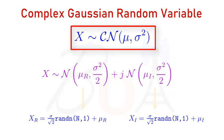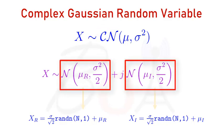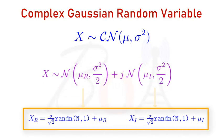The complex Gaussian random variable is represented using the scripted letters C and N as shown here. It can be seen that the samples of random variable X can be generated by first generating the samples of two real-valued random variables and then joining them using the imaginary symbol j. In our earlier videos, we have already discussed the process of generating the samples of a generic real-valued Gaussian random variable in MATLAB. You can find the link to those videos in the description. If you have not already watched those videos, it is strongly recommended that you watch those videos first.